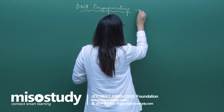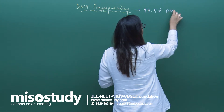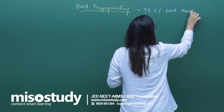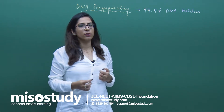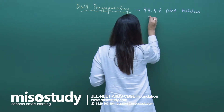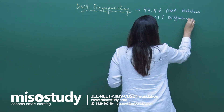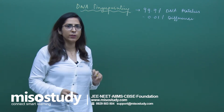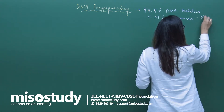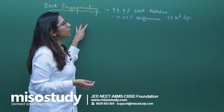If we talk about overall DNA, 99% of one individual's DNA matches with another individual. The difference is just 0.01%. This 0.01% difference means we are talking about 3 × 10^6 base pairs, which itself is a very significant number.